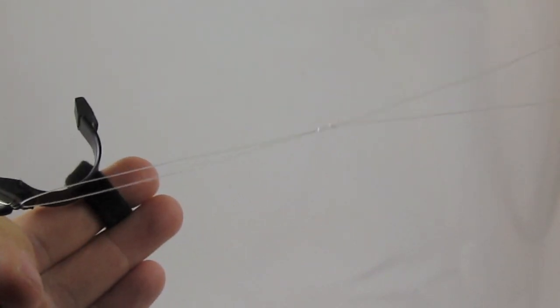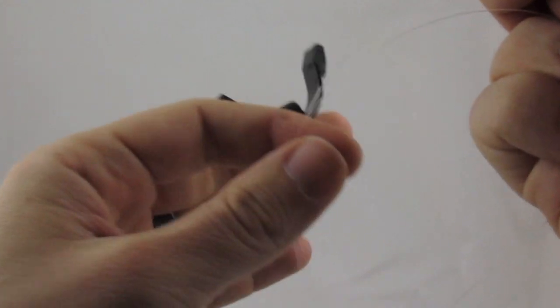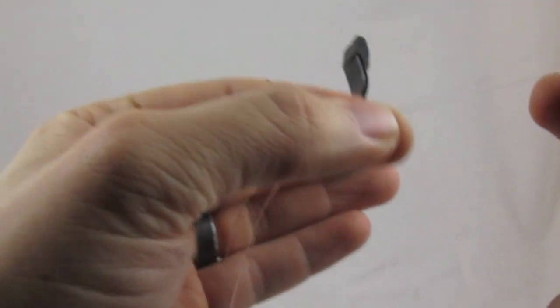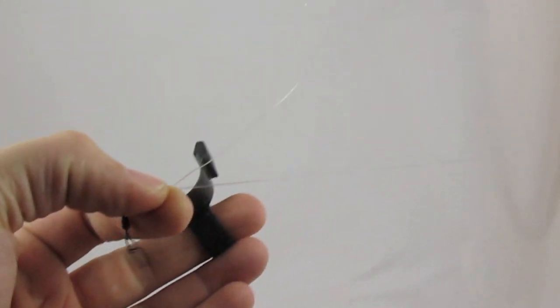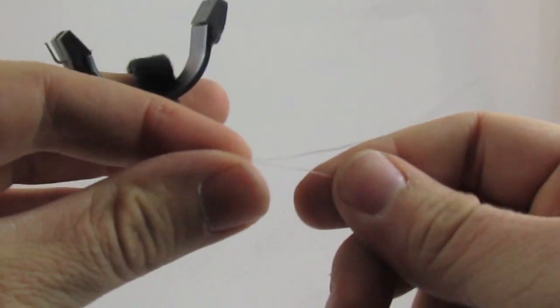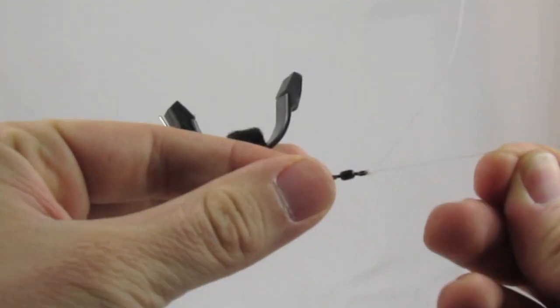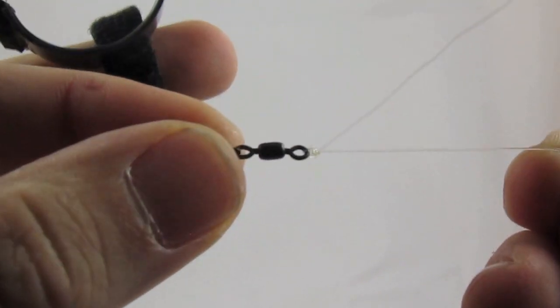See the knot there? And you don't want to get it too tight, but enough. So I take the main line, grab the knot, and it'll slide right down to the end of the swivel. If you can see that, it makes a nice tight knot.